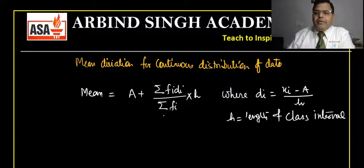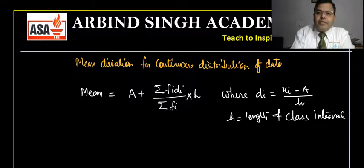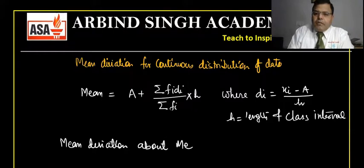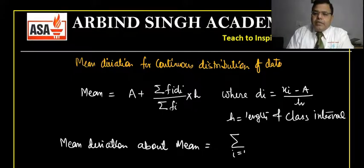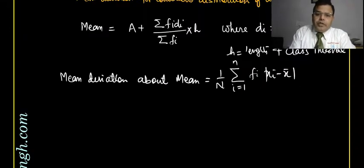First we will use this formula to find the mean, and thereafter we apply the mean deviation formula. Mean deviation about mean is given by: MD = (1/n) × Σfi·|xi − x̄|, divided by Σfi. Now here is Question 9: find the mean deviation about mean of the following data.